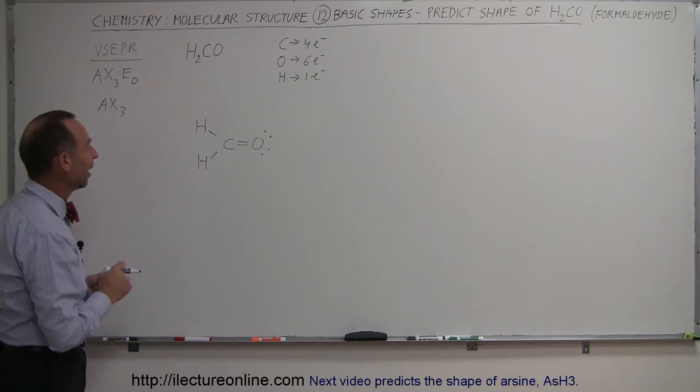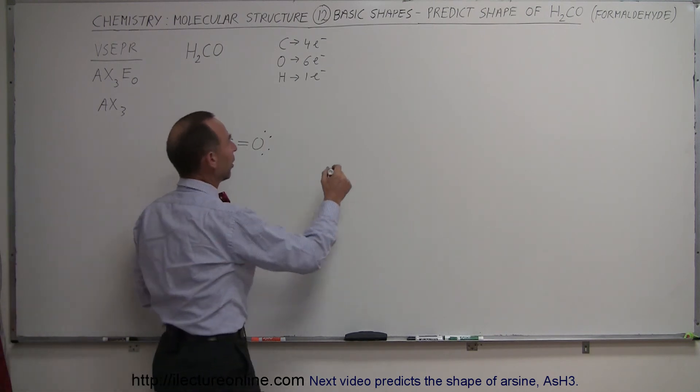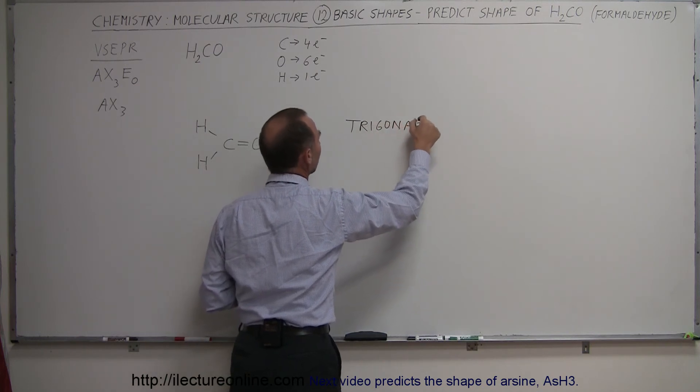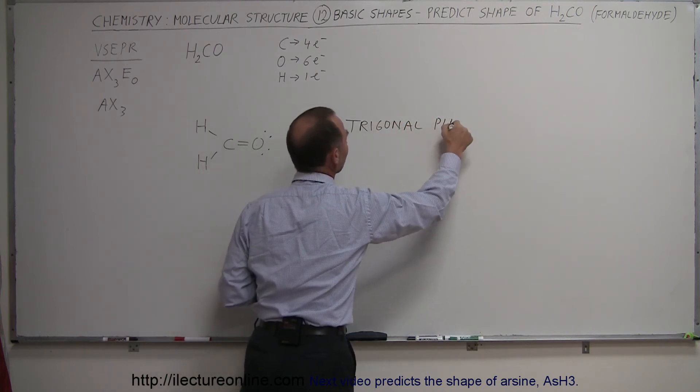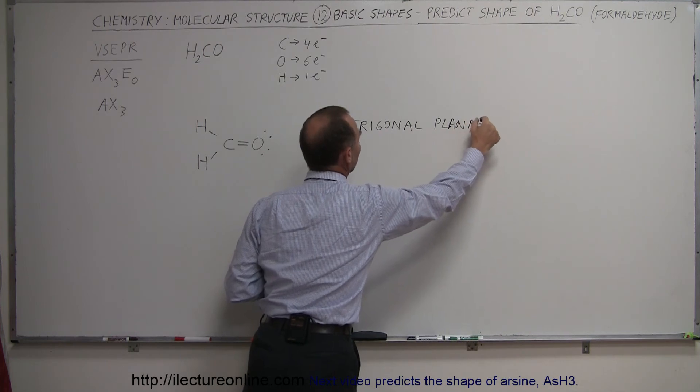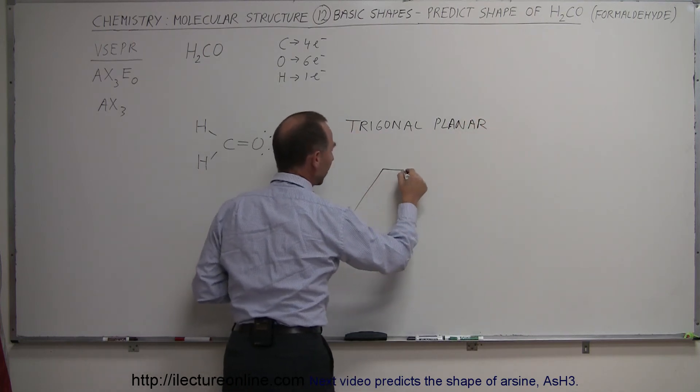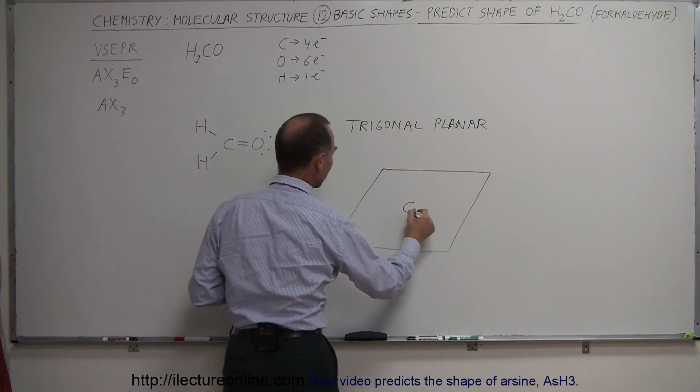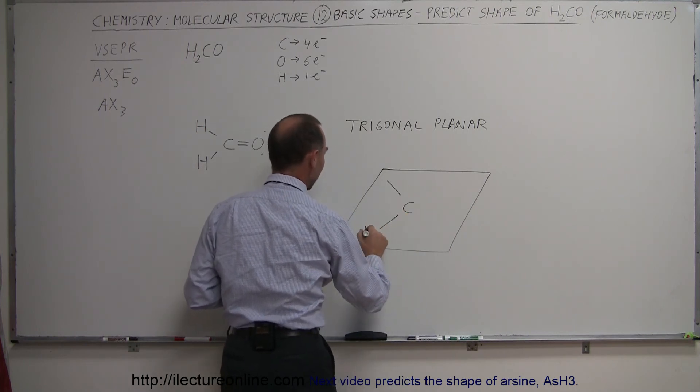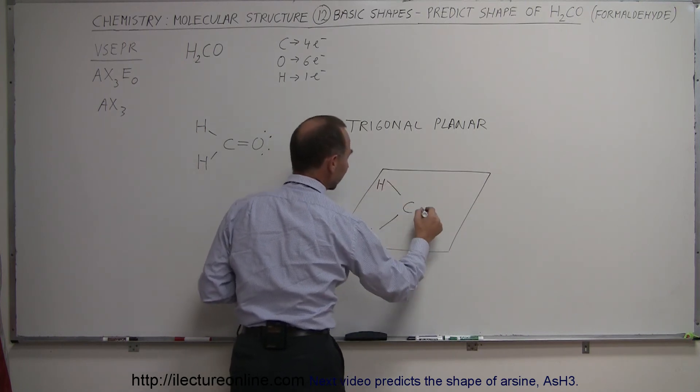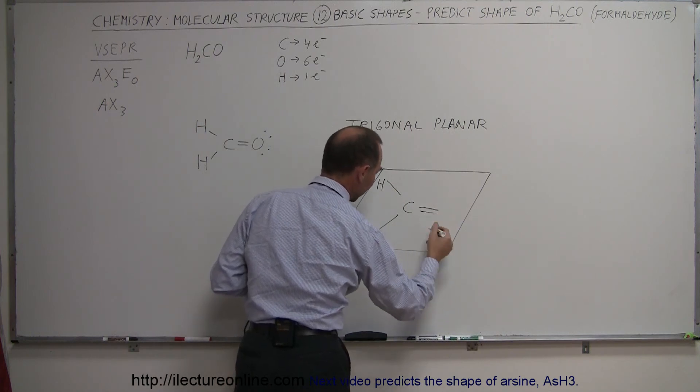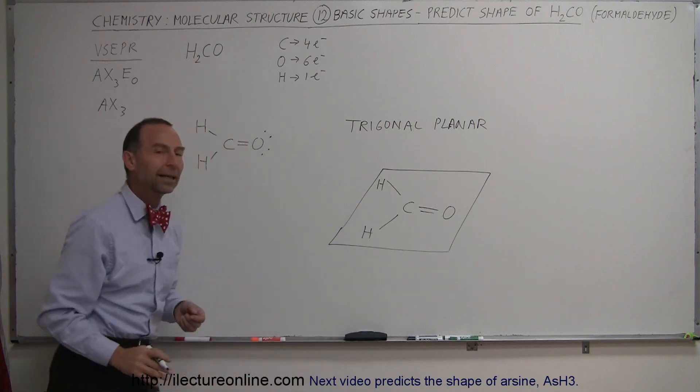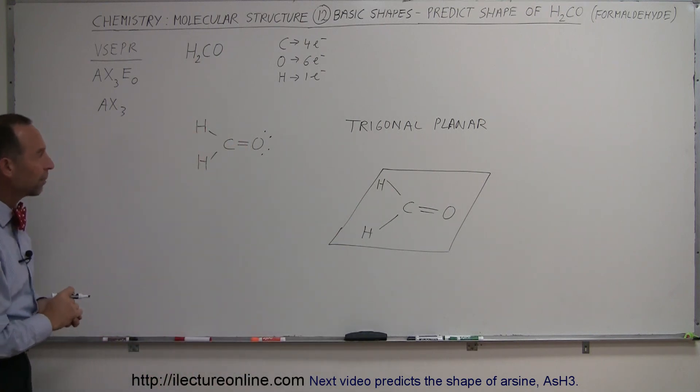That's kind of what it means. So we'll have what we call a trigonal planar shape, and that means that all the atoms will fall in a single plane. We have the carbon in the middle, we have hydrogen sticking out on two sides like this, and a double bond, don't have to really write the double bond here to an oxygen, all in the same plane, and so that's what the general shape of that molecule has to be.